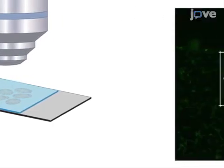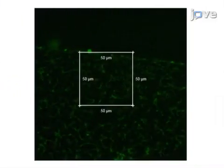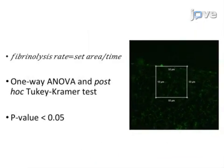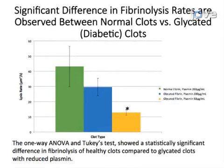Real-time confocal microscopy analysis can then be performed to evaluate the fibrinolysis rates on the normal and glycated clot structures. Ultimately, this real-time analysis can be used to evaluate the morphological differences that occur in abnormal clot structures in response to the disease states in which they arise. This method can help answer key questions in the field of thrombosis and hemostasis, such as how fibrin clot structures differ in patients with diabetes or sickle cell disease.